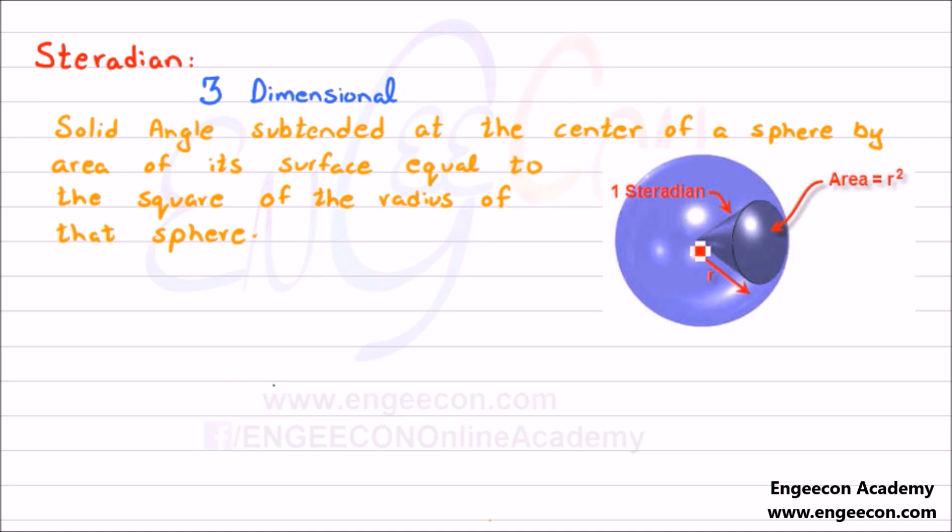The steradian is defined as a solid angle subtended at the center of a sphere by area of its surface equal to the square of the radius of the sphere. In the previous case of radian we considered it as 2D.